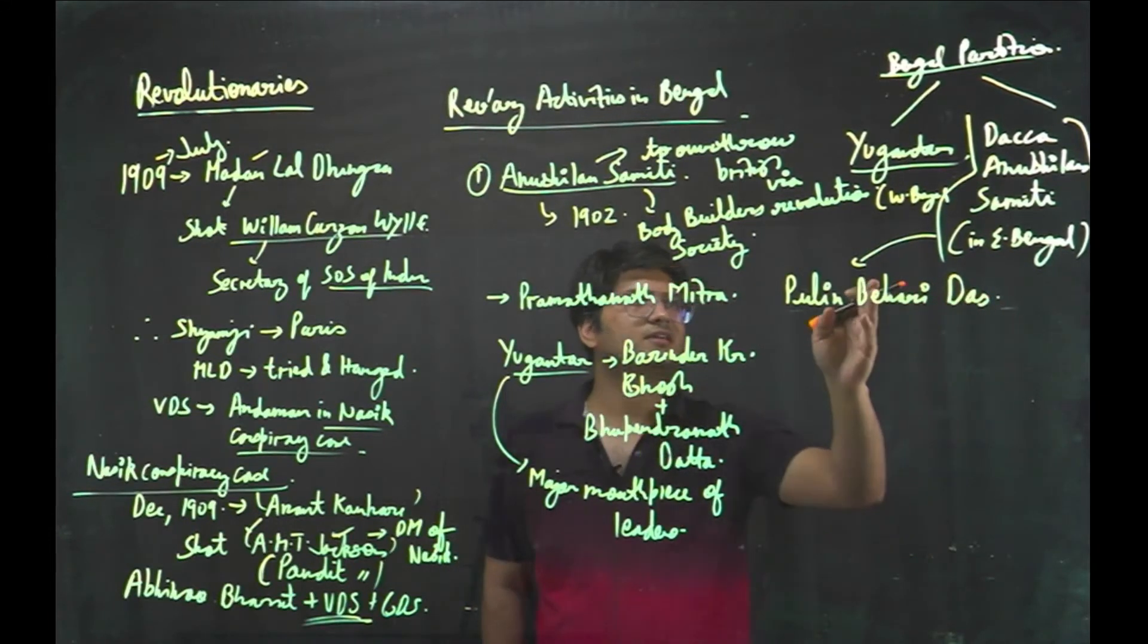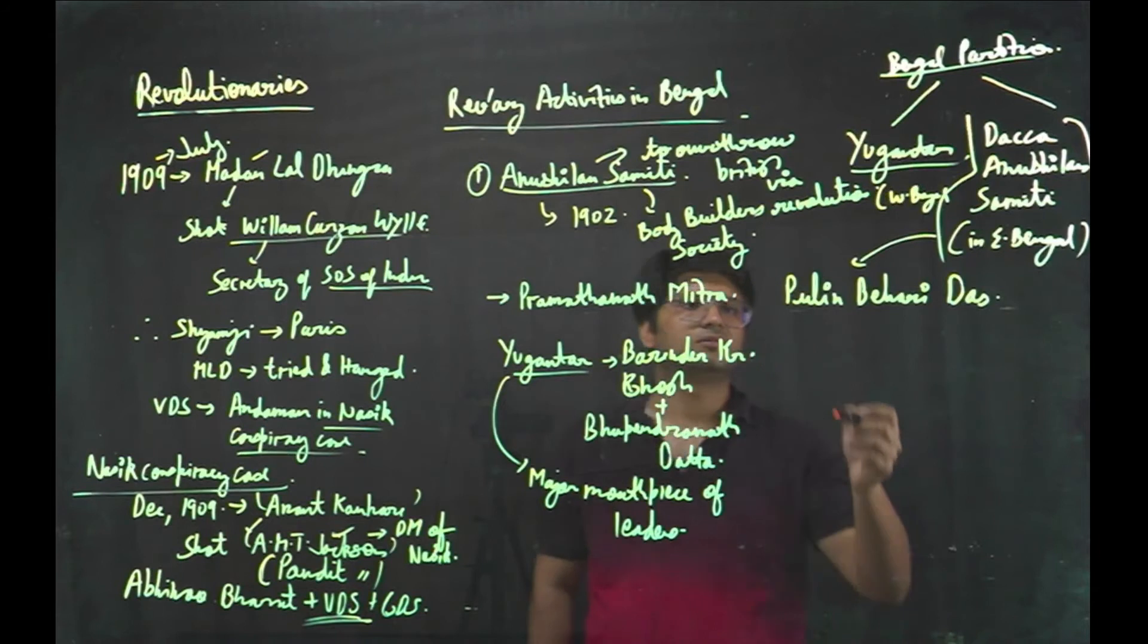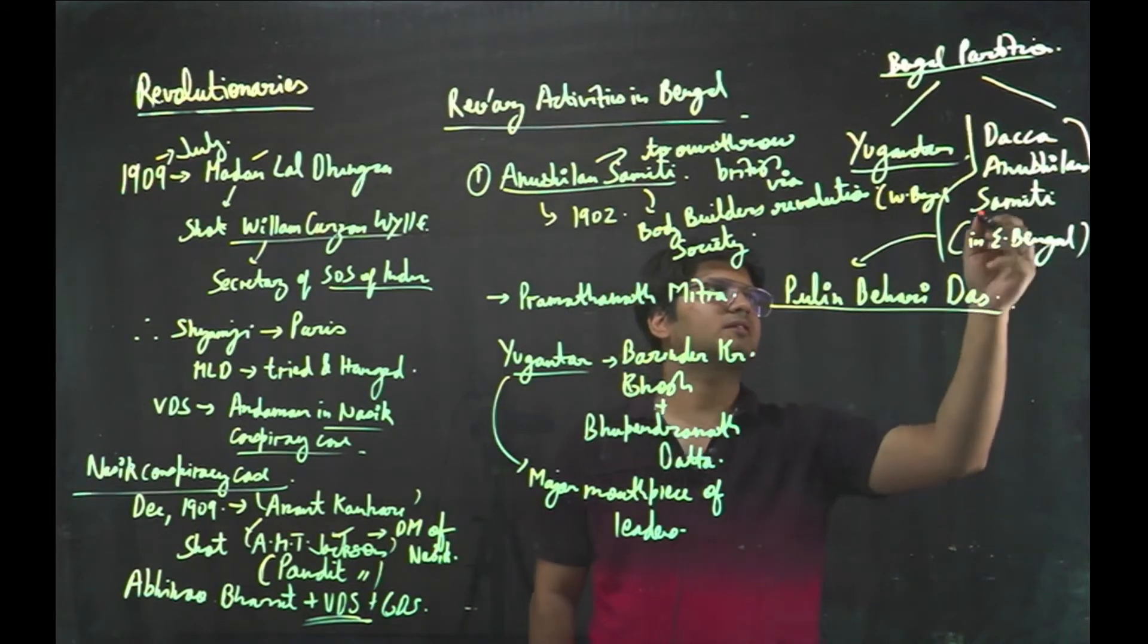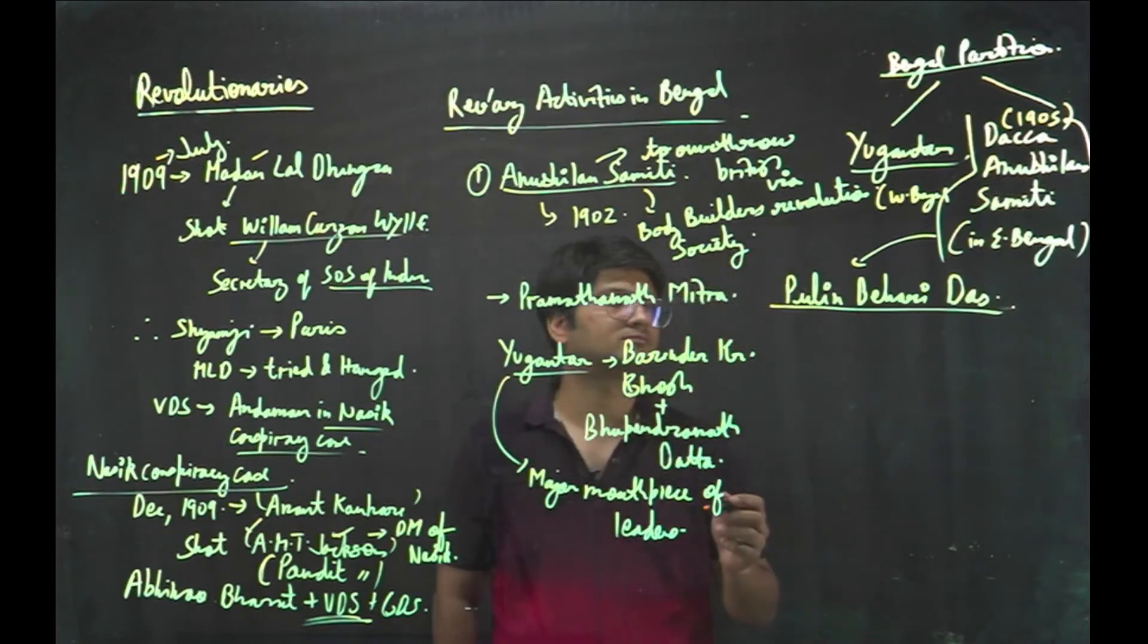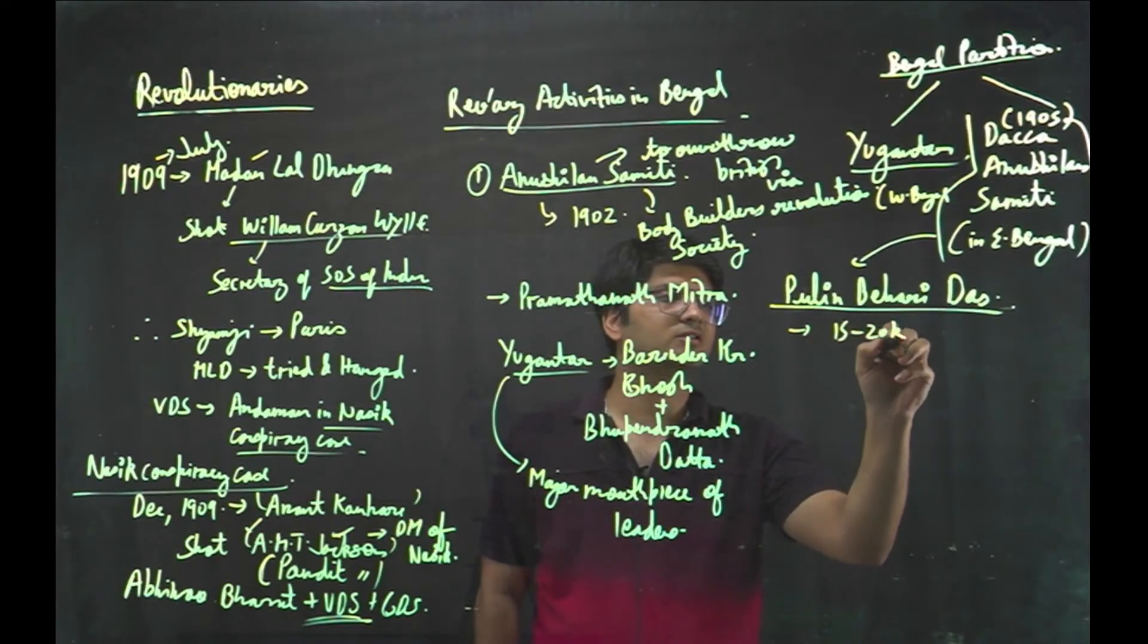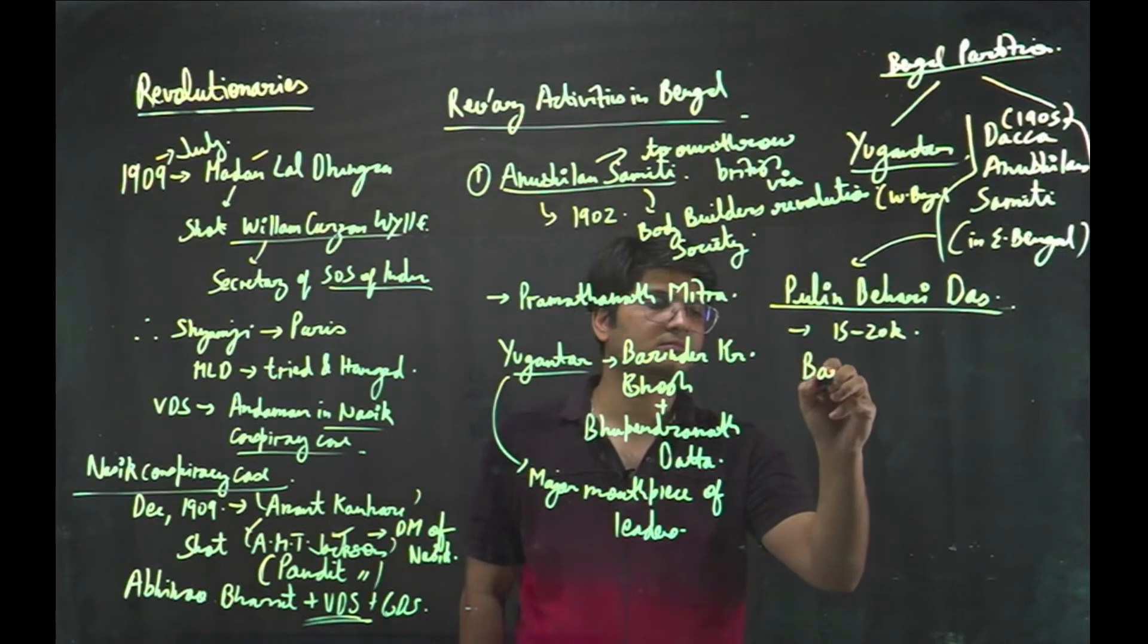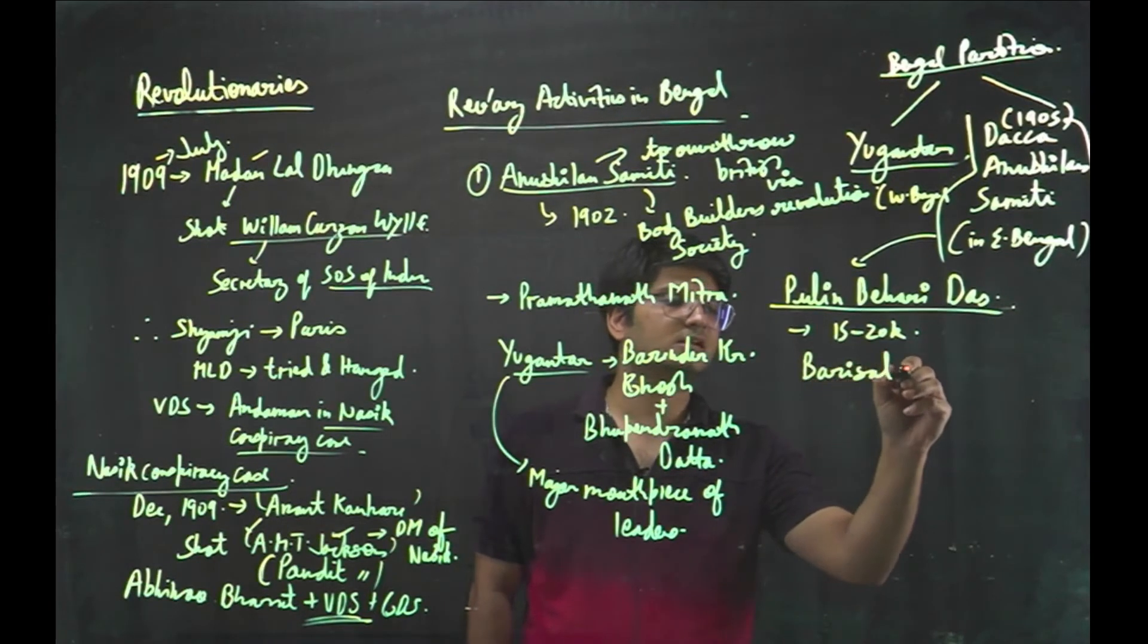And there were differences between the Yuga Antar and Dhakka Anushilan Samiti. Differences propped up due to the approach of Aurobindo. It was established in 1905. And it spread like wildfire. Within few, just in a few time, 15 to 20,000 people joined this Dhakka Anushilan Samiti.